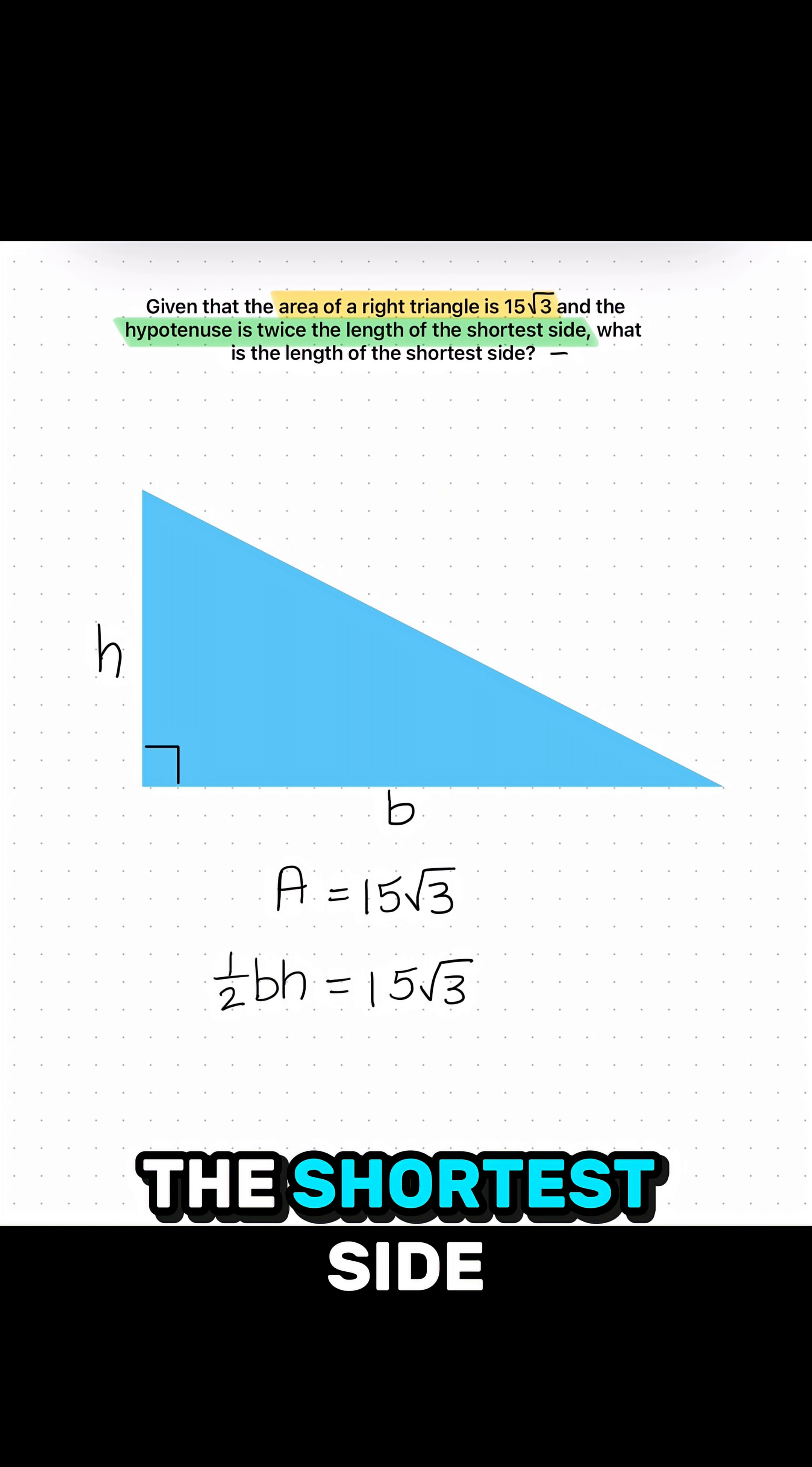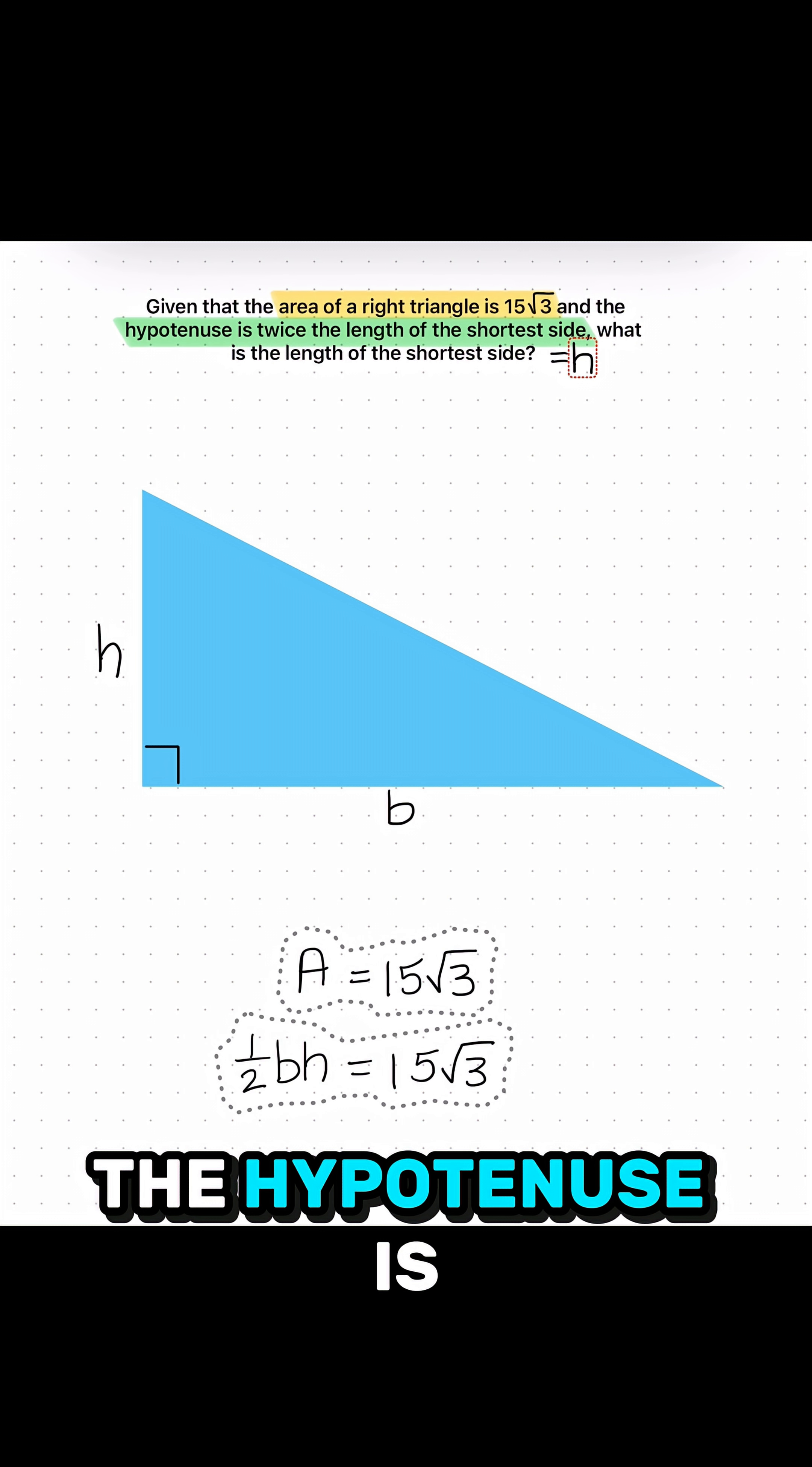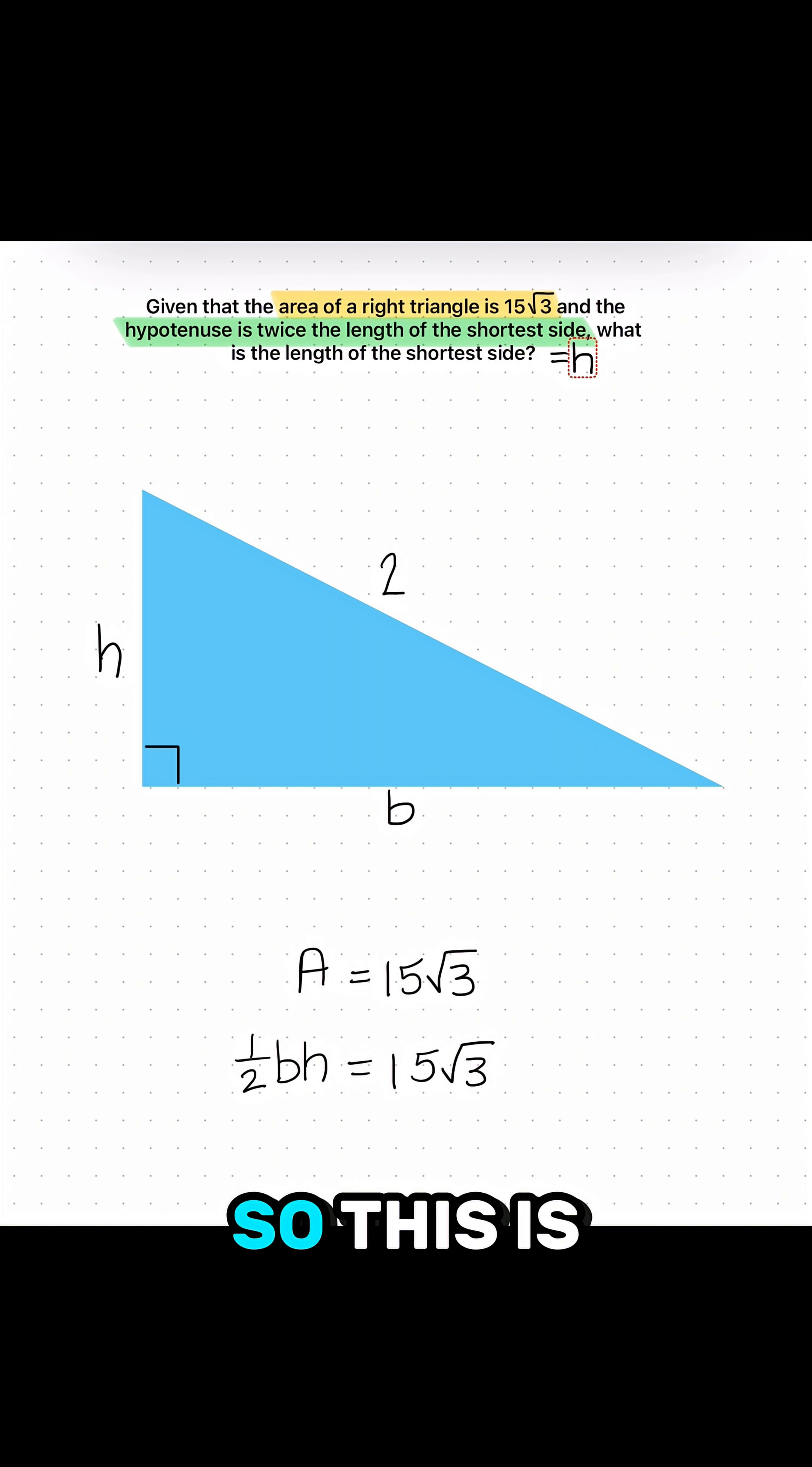In our case, the length of the shortest side is going to be h. Therefore, reading the sentence that's highlighted in green, the hypotenuse is twice that. So our hypotenuse would be across from the 90 degree angle. So this is 2h.